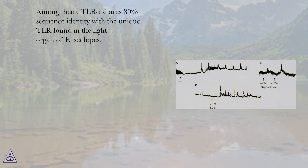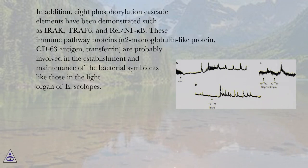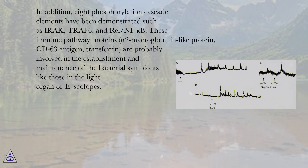Among them, TLR-alpha shares 89% sequence identity with the unique TLR found in the light organ of E. scolopes. In addition, eight phosphorylation cascade elements have been demonstrated such as ARAC, TRAF-6, and REL/NF-kappa-B. These immune pathway proteins — alpha-2-macroglobulin-like protein, CD63 antigen, transferrin — are probably involved in the establishment and maintenance of the bacterial symbionts like those in the light organ of E. scolopes.